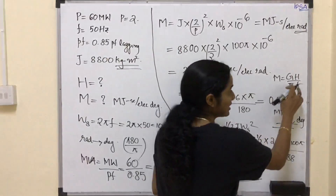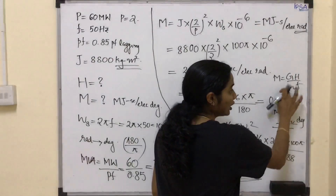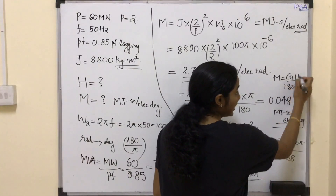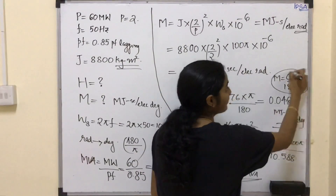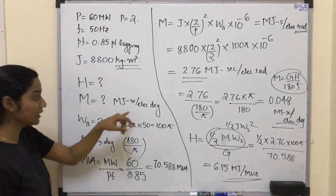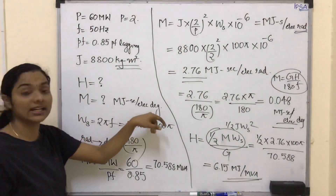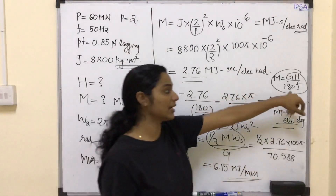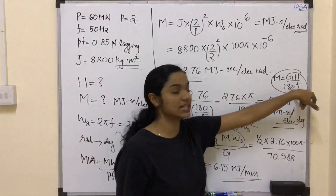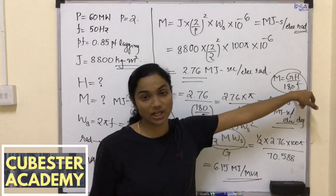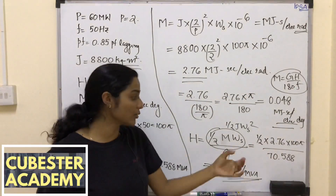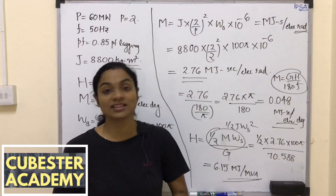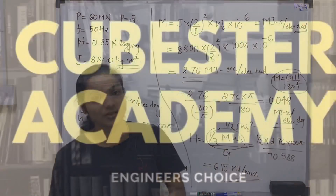One more thing: the π to 180 conversion applies because electrical degree is calculated using π over 180. I hope this question is clear to you. Let's meet in the next lecture. Thank you.